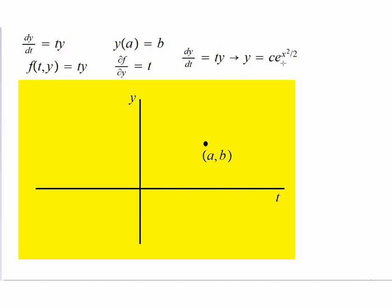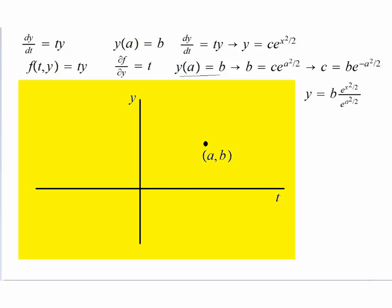And you can even calculate by using the separation of variables that a general solution for this differential equation is given by this. After you integrate and when you apply the initial condition, then what happens is you can solve and see that this constant c is going to be b times e to the negative a squared over 2.